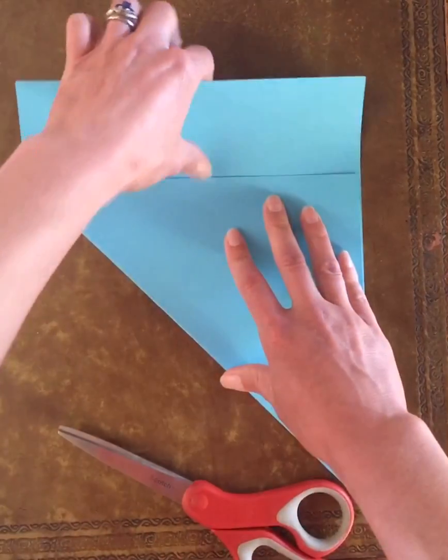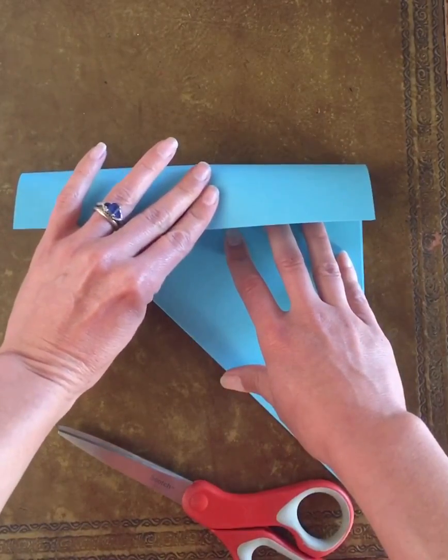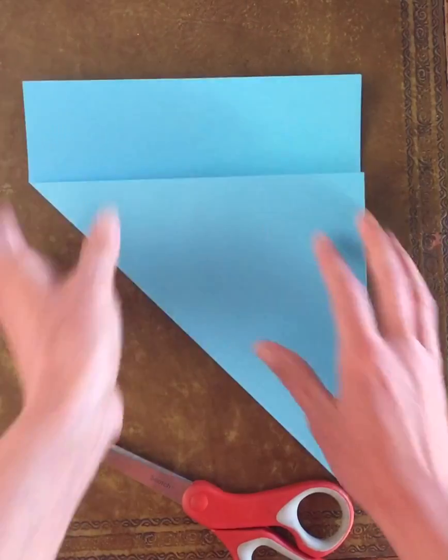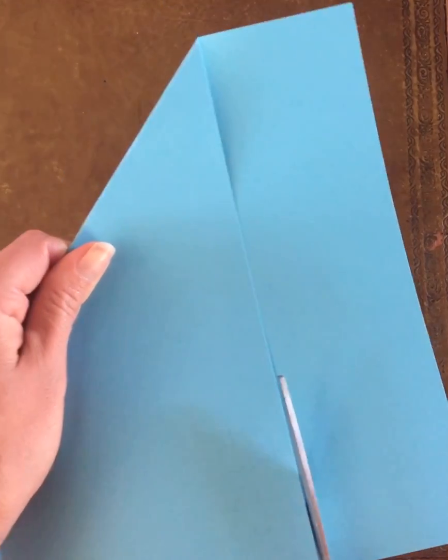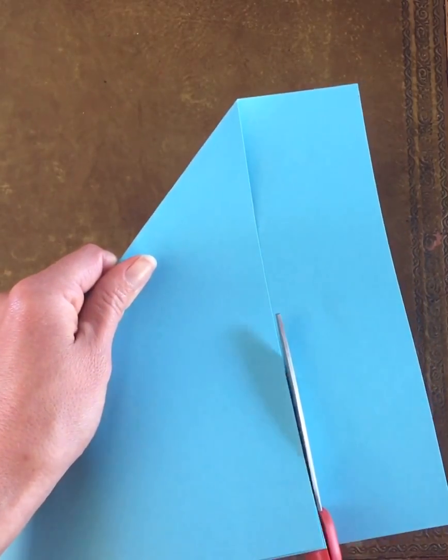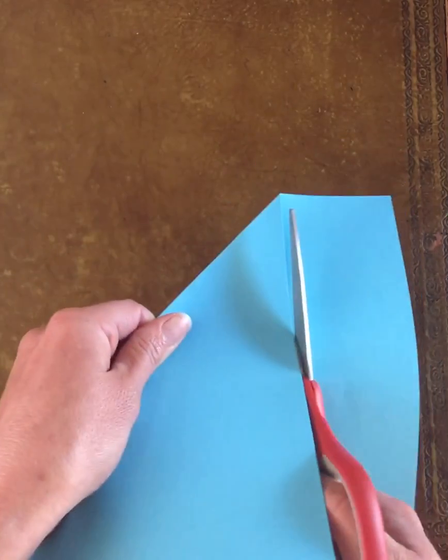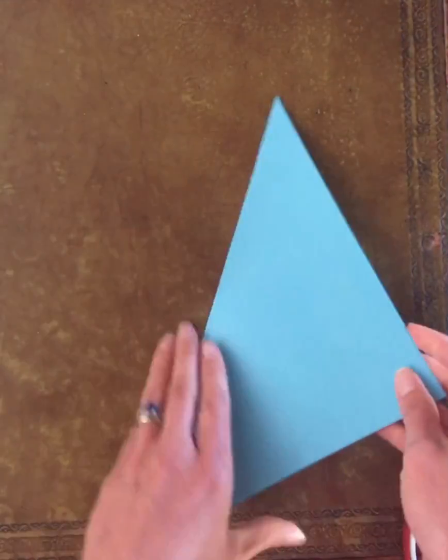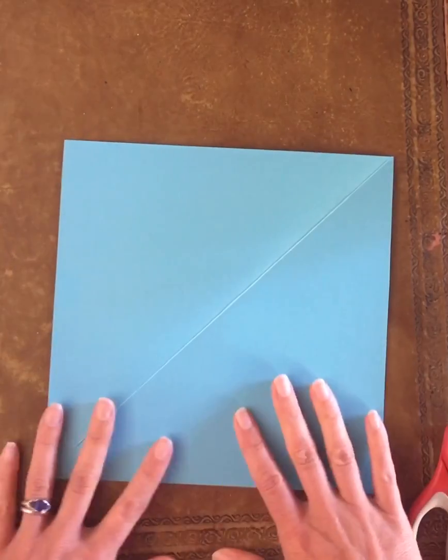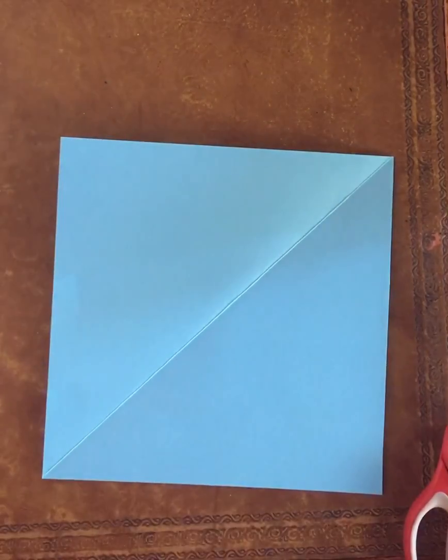And again, if you're not using scissors you could fold this side over back and forth several times and then tear along the crease, but I'm going to use scissors. I'm going to make a nice straight cut along this line so that when I open it up I have a square. That is my first step, getting the original square piece.